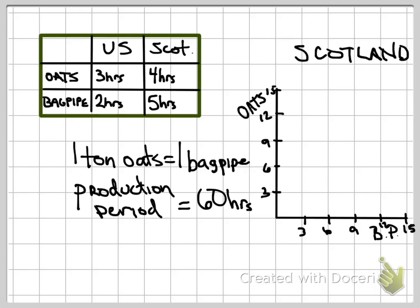Looking at the opportunity cost table we have here, we can identify that this is going to be an example of input conditions, and we are looking at those opportunity costs in terms of those input outcomes. When we do our shortcut method and do the cross-multiplying, we're looking for the lower number — if it was an output, we'd be looking for the higher number. So we have 15 and 8, and we can identify that Scotland is going to have a lower opportunity cost in producing oats.